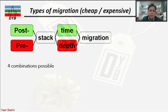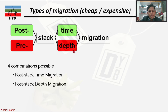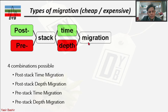We have two domains — post-stack and pre-stack — and two velocity variation approaches — time and depth. Combining these gives four migration strategies: post-stack time migration (PSTM), post-stack depth migration (PSDM), pre-stack time migration (PreSTM), and pre-stack depth migration (PreSDM).